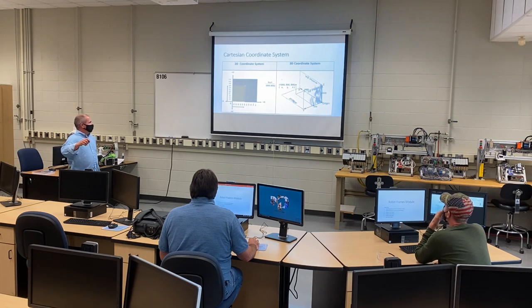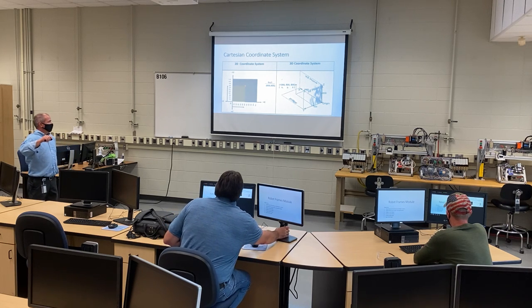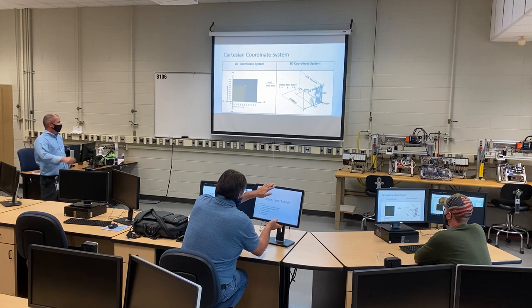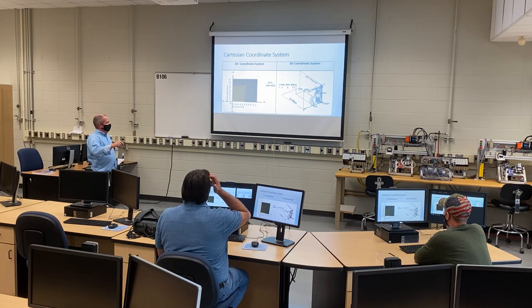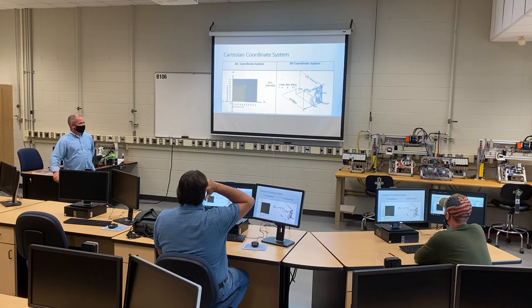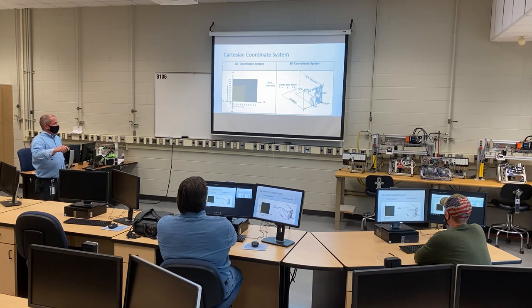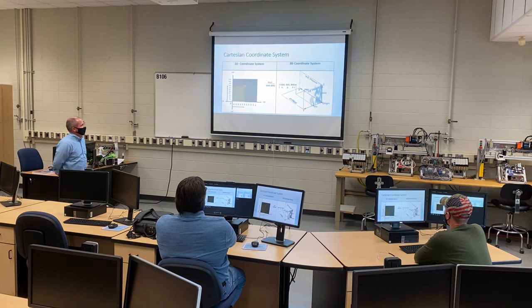The first thing we're going to get into is coordinate systems. To the left here should look somewhat familiar — the old math 2D coordinate system, X and Y. X over, Y up. The robot's working in a 3D system, so you're going to have an X, Y, Z coordinate system — three coordinates for all of your points.